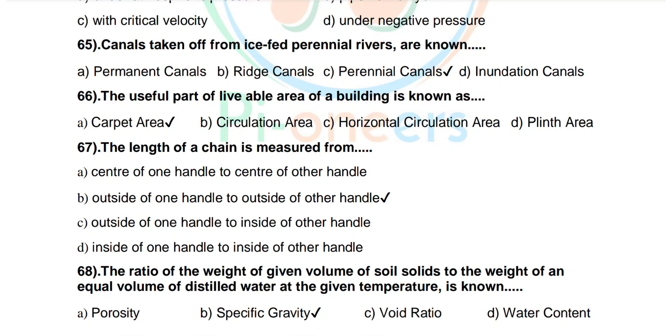Question number 68: The ratio of the weight of given volume of soil to the weight of an equal volume of distilled water at the given temperature is known as. Options are porosity, specific gravity, void ratio, water content. Correct answer: specific gravity.